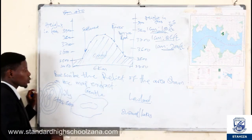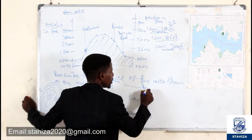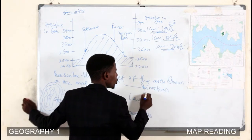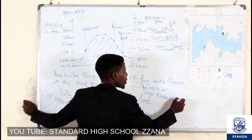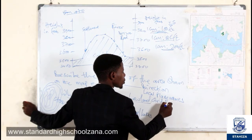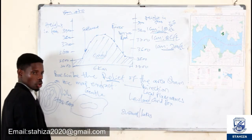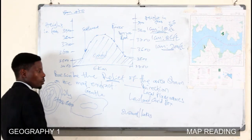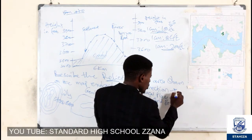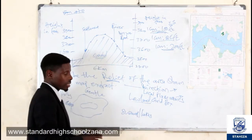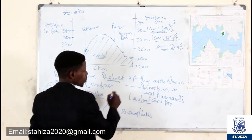While describing relief, direct someone using direction, local place names, and grid squares. Tell someone: go to this grid square and you will find this feature. Tell someone that in the southeastern part of this area, around this local place name, there is such and such a feature. That is what we mean by describing relief properly.